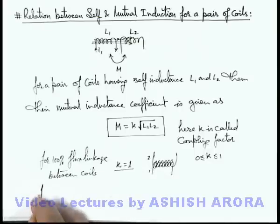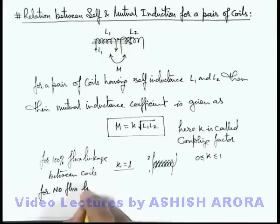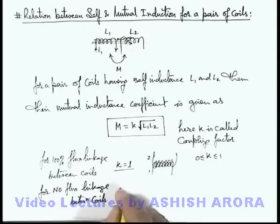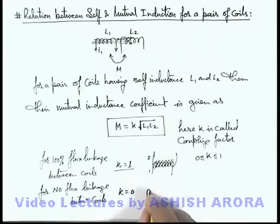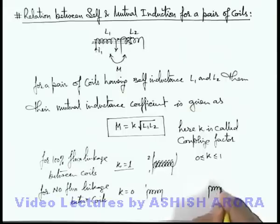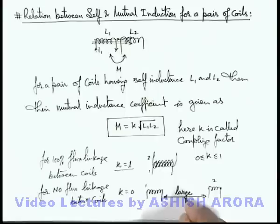And we can write for no flux linkage between coils, here we can write the value of k is equal to zero. This can happen in two situations. One is the case when coil one and coil two are very far away, the separation between them is very large. Then we can say that any flux of coil one will not pass through the second coil under ideal situations.